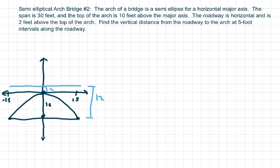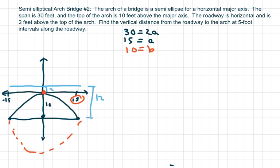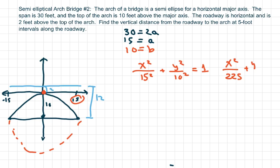The length of my major axis is 30, so 30 is the length of 2a, which means a is 15. We're going from the origin and b is just 10 because we only have half an ellipse, so we're not even looking at the minor axis. So we write x squared over 15 squared plus y squared over 10 squared equals 1. That gives us x squared over 225 plus y squared over 100 equals 1.